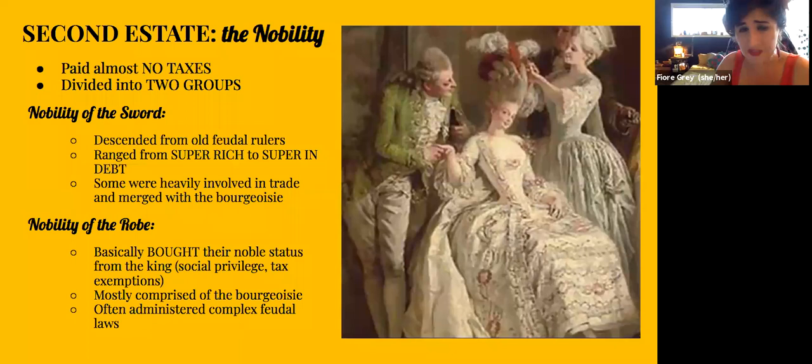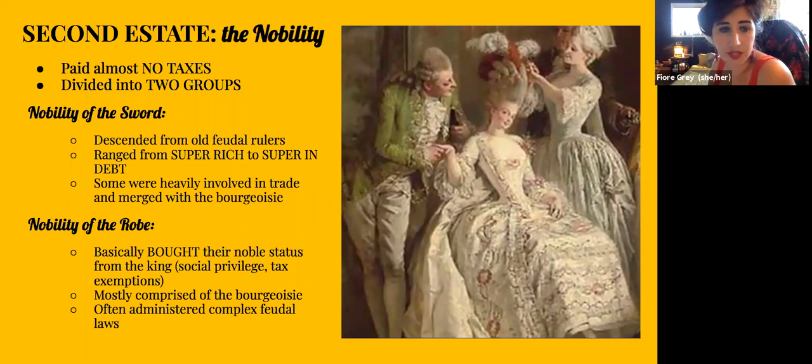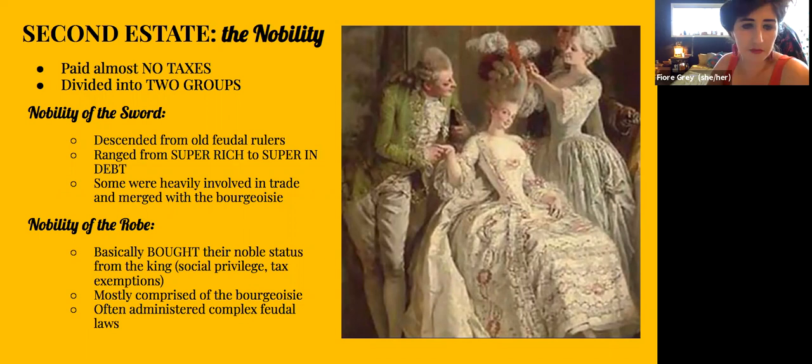The second estate was the nobility. They paid almost no taxes and were divided into two groups: the nobility of the sword, which descended from feudal rulers and ranged from super rich to super in debt, with some heavily involved in trade merging with the bourgeoisie; and the nobility of the robe, who basically bought their noble status from the king to gain social privilege and tax exemptions, and were mostly comprised of the bourgeoisie who often administered complex feudal laws.